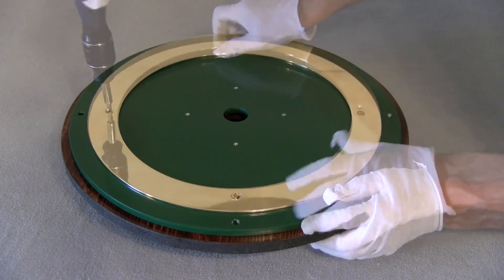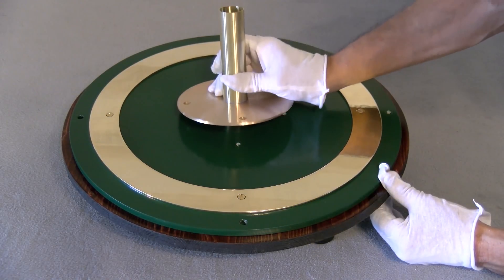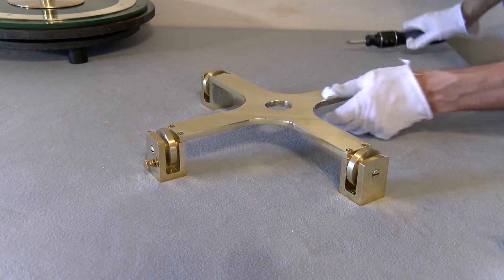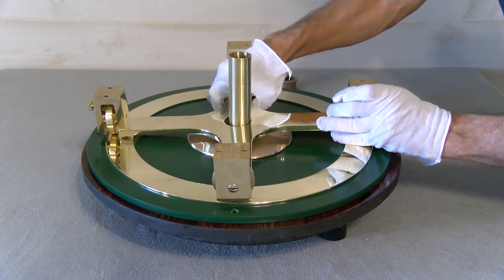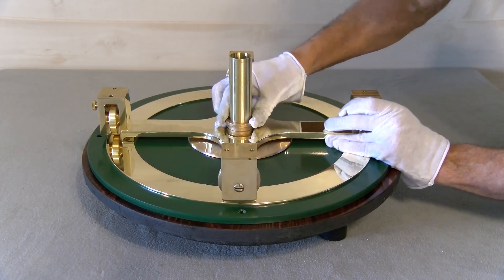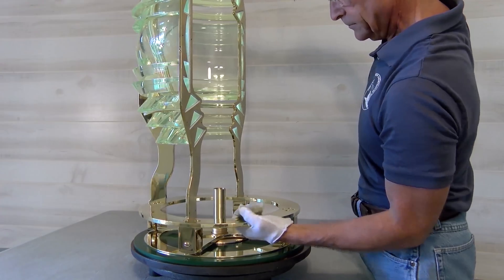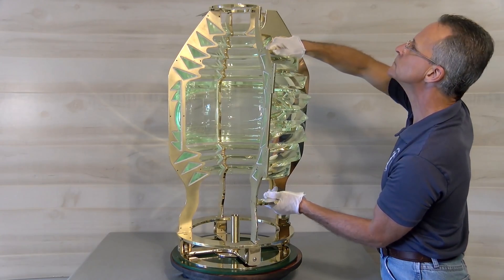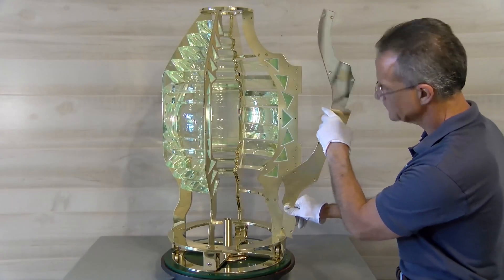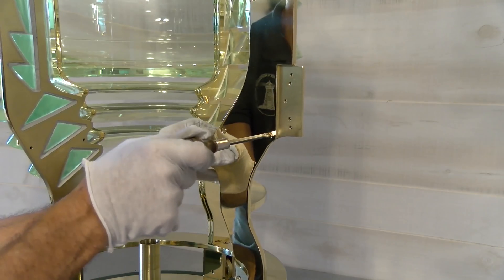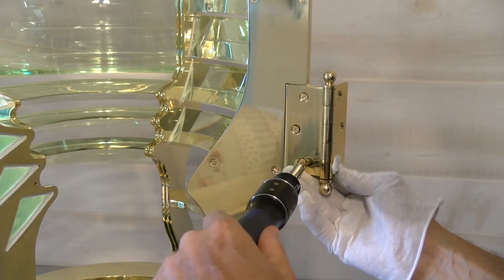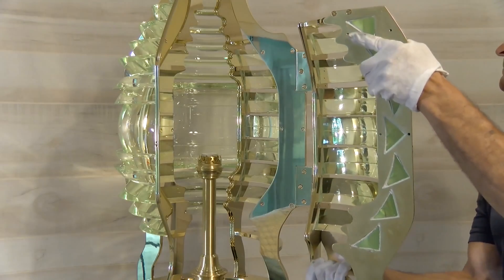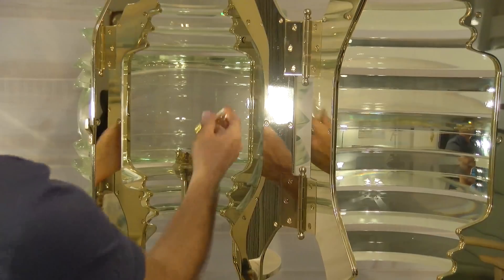The final step is to assemble all the components, which would include the lens base, service wheels for a fixed lens, the lens optical panels, hinges to hang the door, and finally a reproduction lamp to complete the lens.